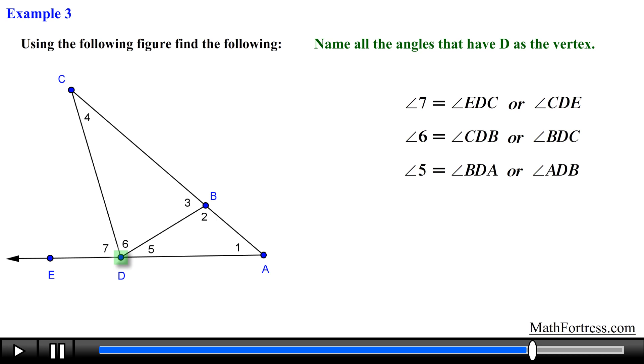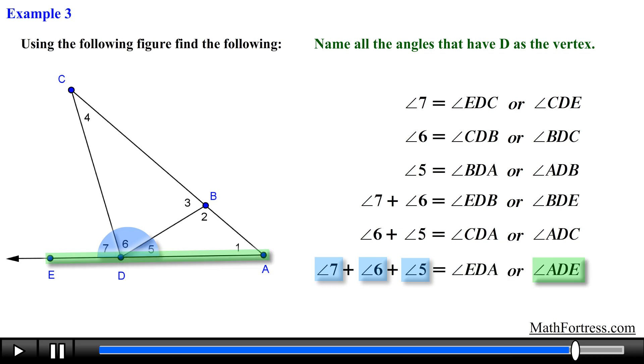The next angle is formed by the sum of angles 7 and 6 and can be named as angle EDB or angle BDE. Another angle is formed by the sum of angles 6 and 5 and can be named as angle CDA or angle ADC. The final angle is formed by the sum of angles 7, 6 and 5 and can be named as angle EDA or angle ADE. This is another example of a straight angle.